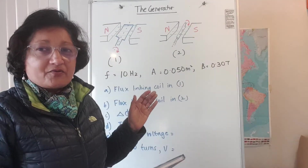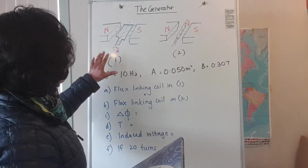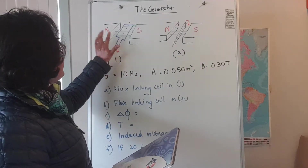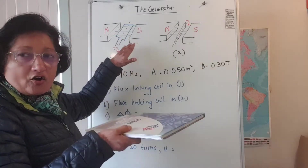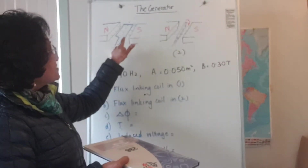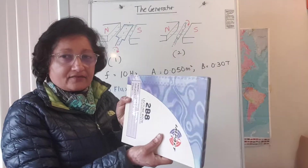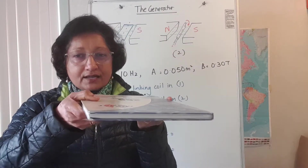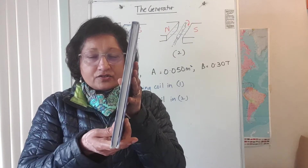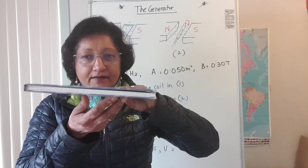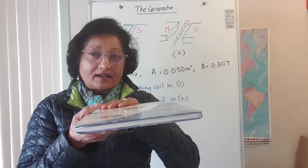I've drawn two diagrams on the board. Those are your two poles of the magnet: this is the coil when it's in the horizontal position — parallel to the lines of flux — and this is when the coil is in the vertical position. For a complete cycle, it goes from horizontal to vertical, horizontal the other way, to vertical and back — that's one cycle.